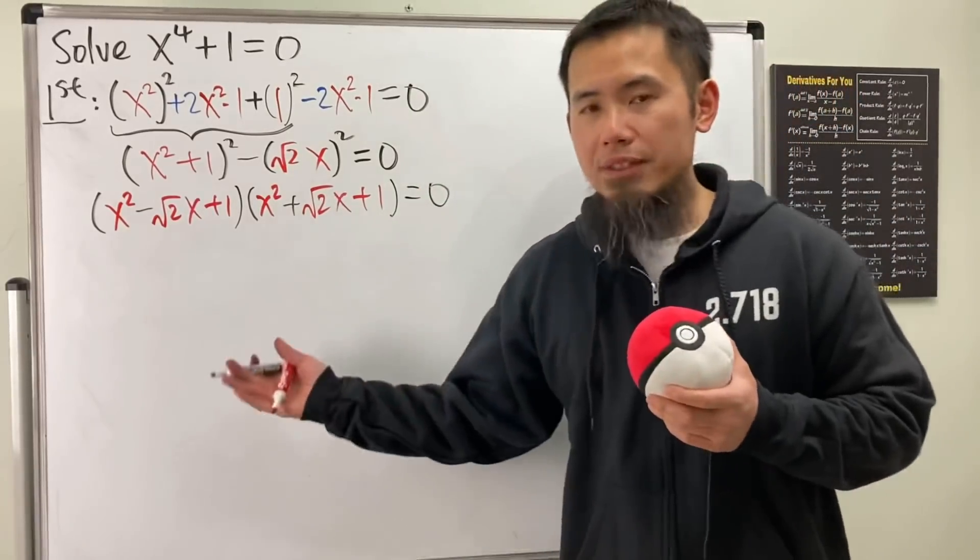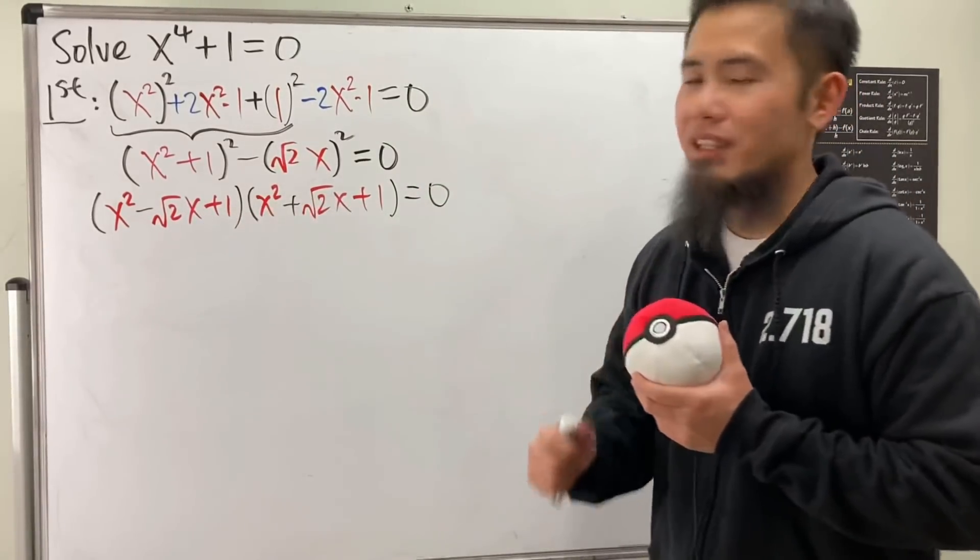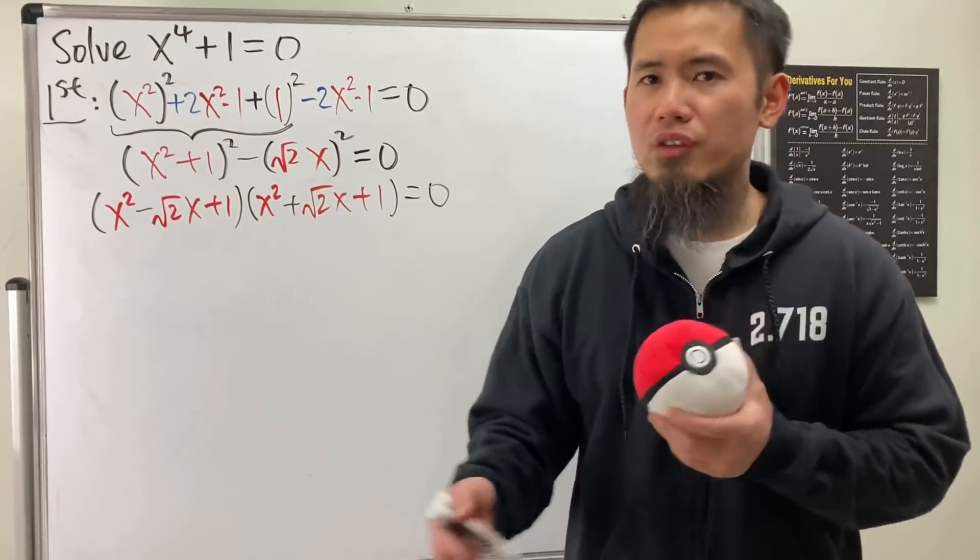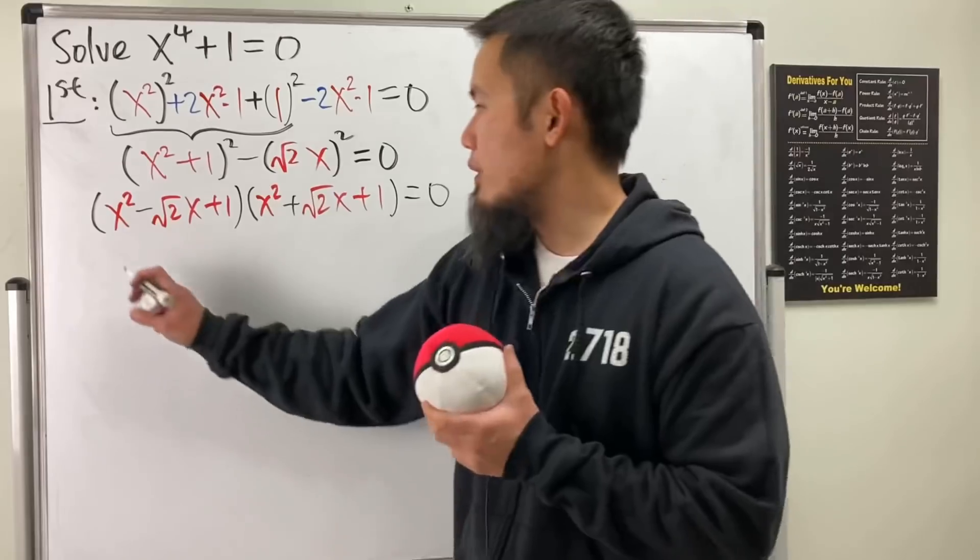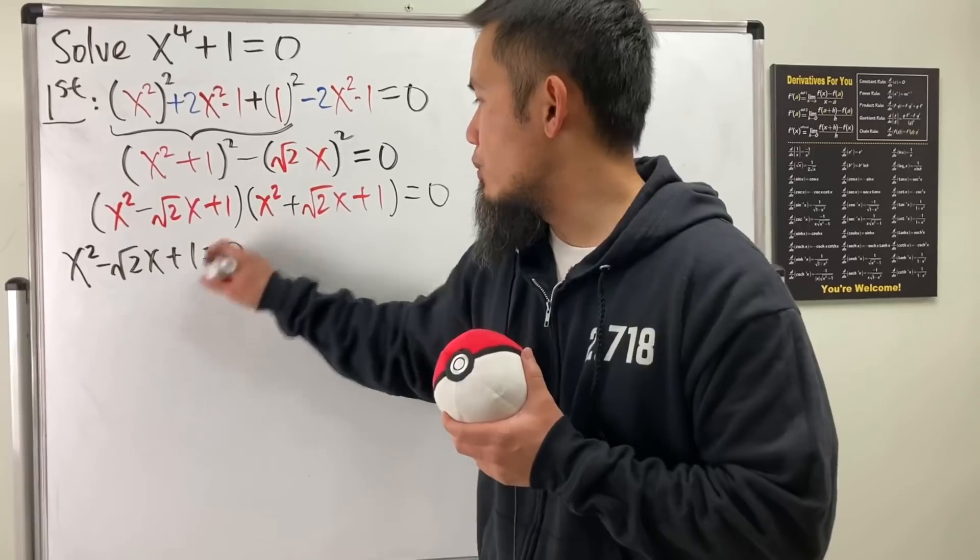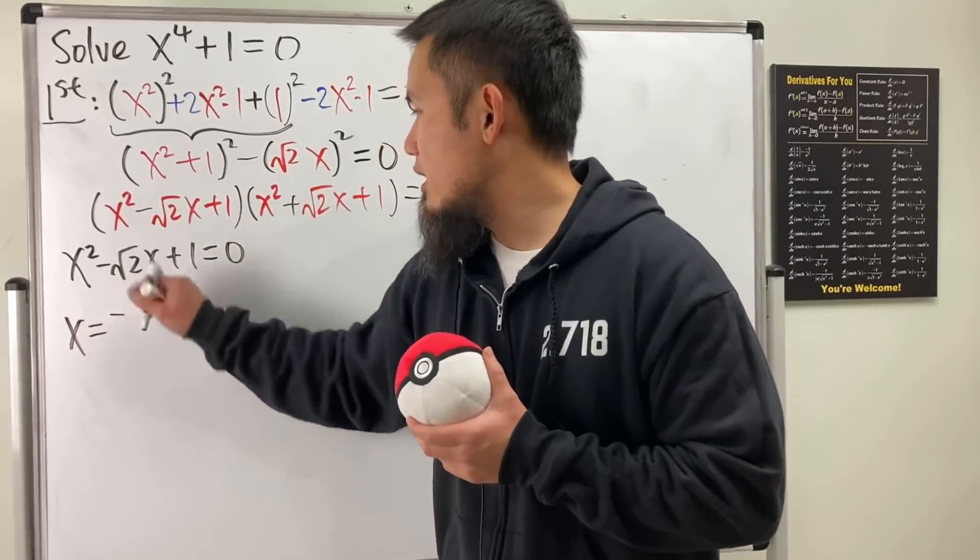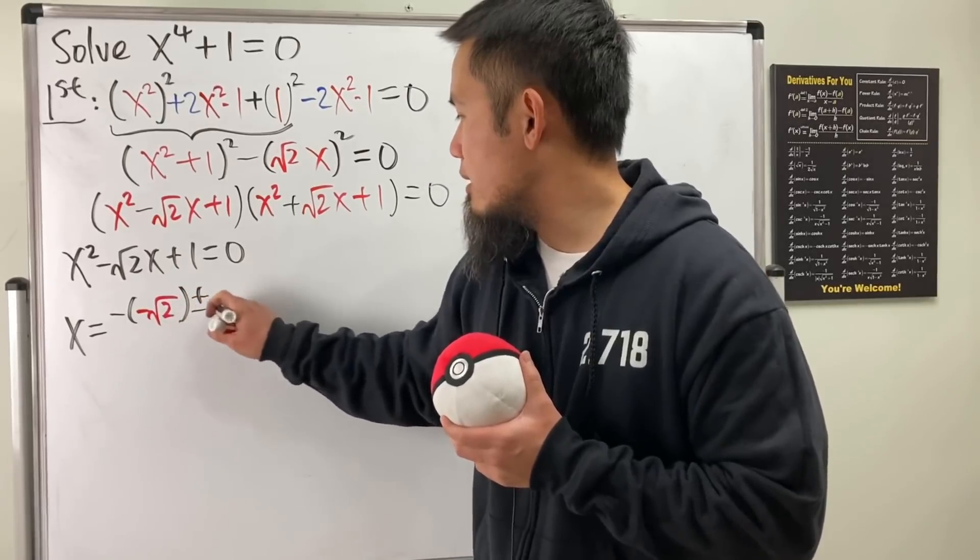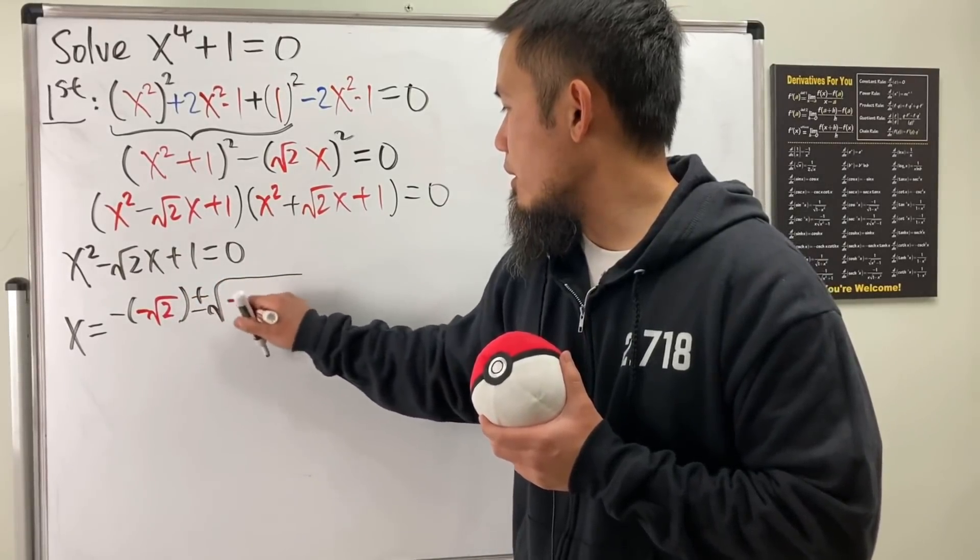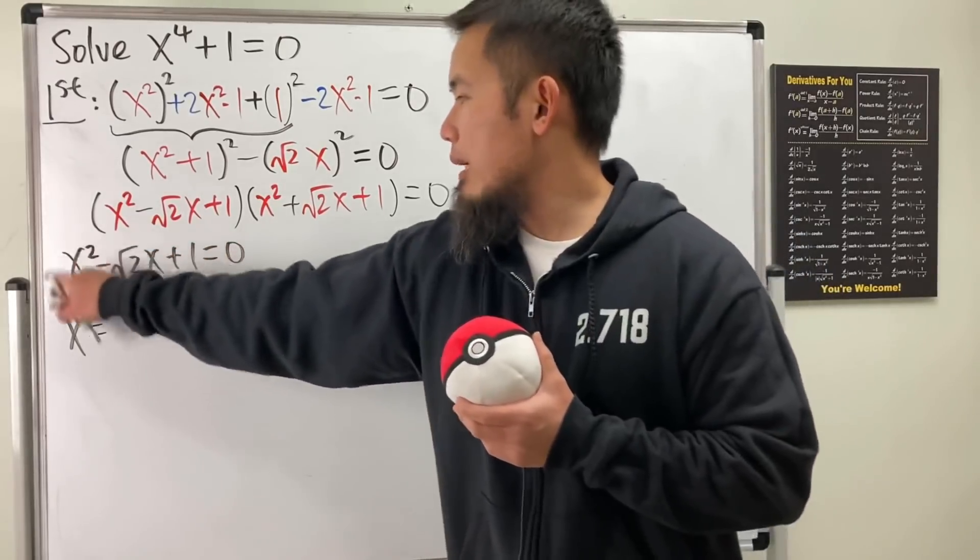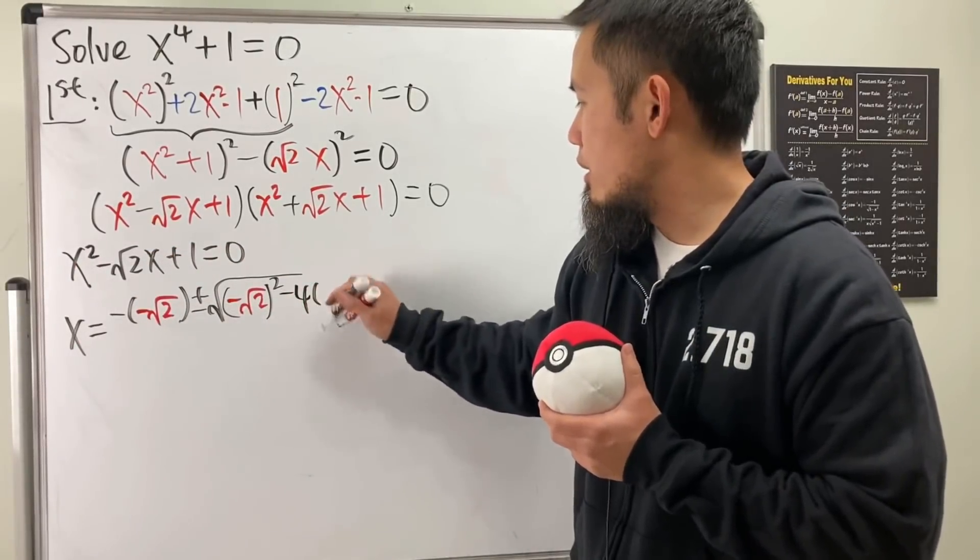And now we have these two factors and both of them are quadratic. Of course we can set this equal to zero and use the quadratic formula to solve it. That's pretty much it. So we'll do that. So x squared minus square root of 2x plus 1, this is equal to zero. x is going to be negative b, which is negative square root of 2 here, and then plus or minus square root of negative b, which is negative square root of 2 squared minus 4 times 1 and 1, so minus 4.